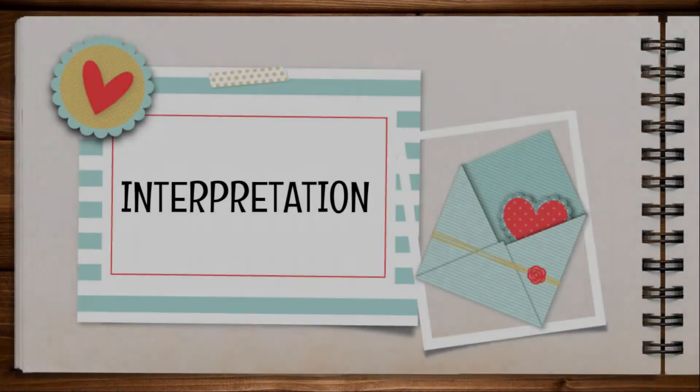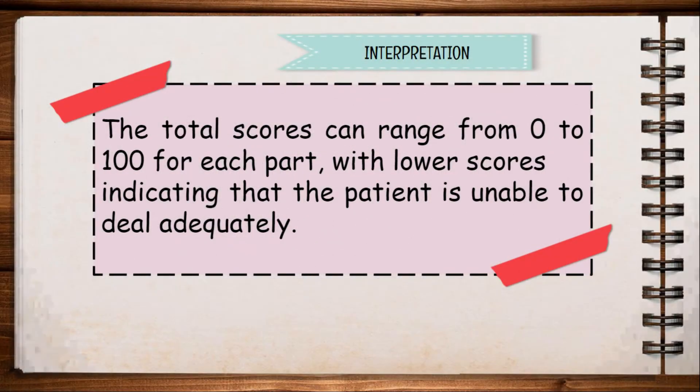For the interpretation of OTOS, the total scores can range from 0 to 100 for each part, with lower scores indicating that the patient is unable to deal adequately during involvement in task group. For my observation, for task behavior, you got 78 over 100. All items assessed received around 7 to 9 scores over 10, which indicates that you managed to do the task with good behavior, such as being able to engage and concentrate when doing the task. You were also able to tolerate frustration, as you were patient while waiting for your turn to put the sardine on your bread.